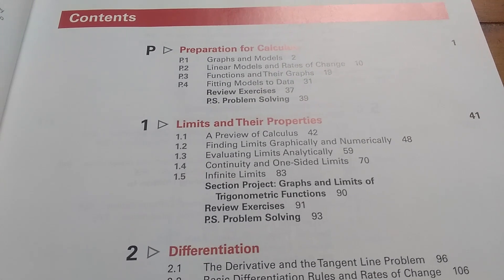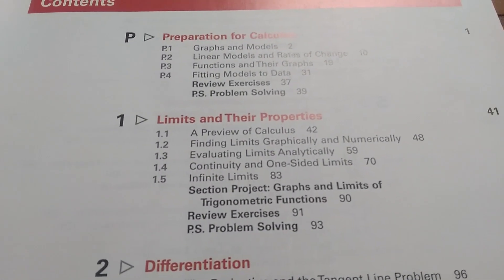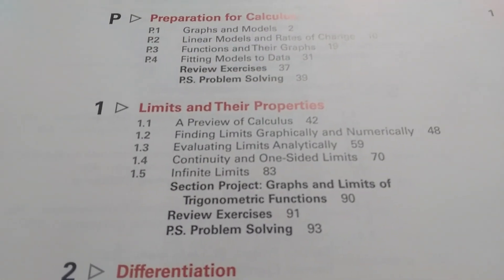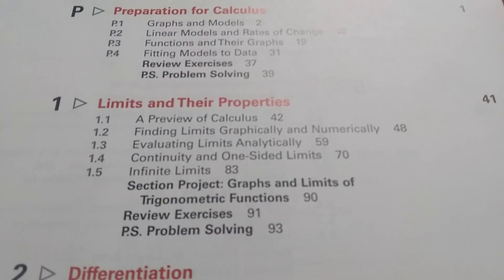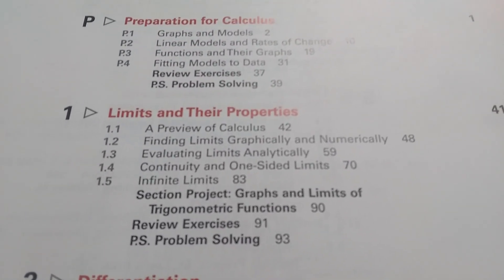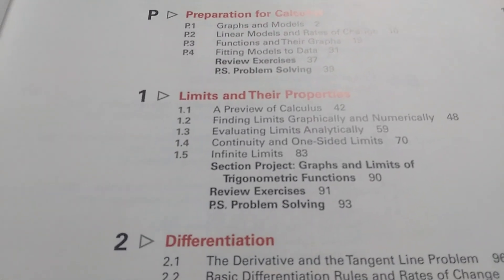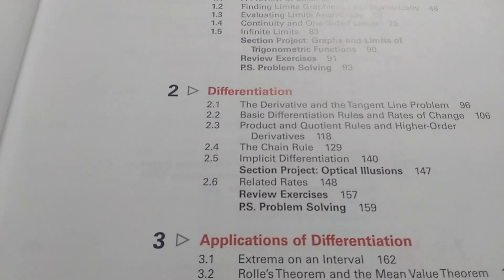The contents are really standard. It starts off with a preview of calculus. I usually skip this section and start with 1.2, which is finding limits graphically and numerically. This is the section where the author talks about delta epsilon proofs. I actually teach those on the very first day of class. So chapter 1 is all on limits and continuity, and then chapter 2 is on differentiation.